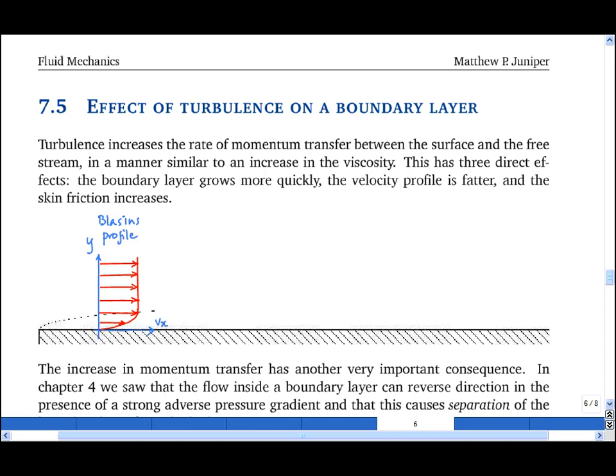When the boundary layer becomes turbulent, the rate of momentum transfer from the free stream greatly increases. Therefore the free stream loses momentum more quickly, and the rate at which the boundary layer grows increases. So I've drawn here the boundary layer thickness as a function of x.